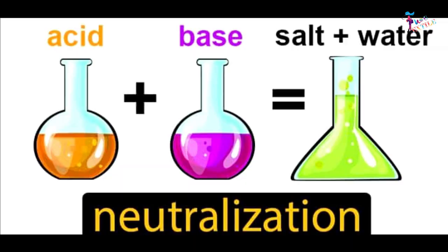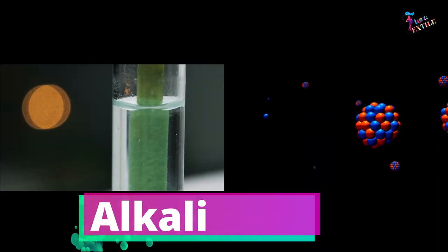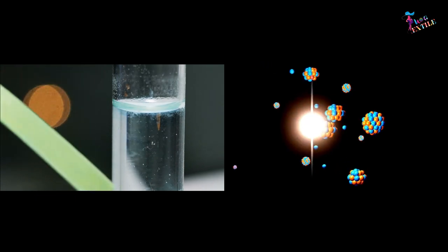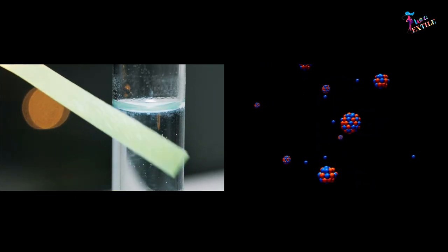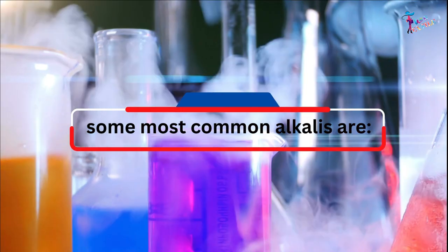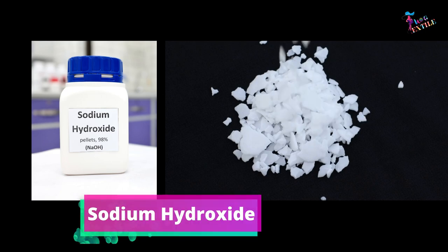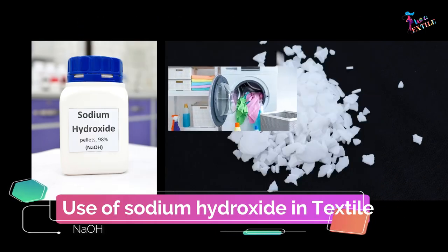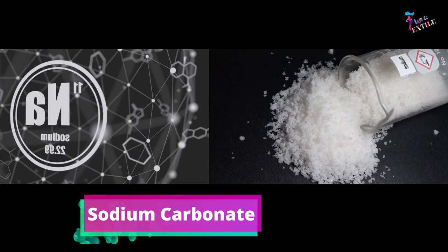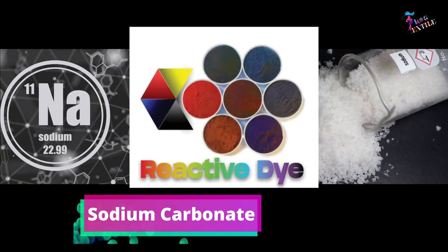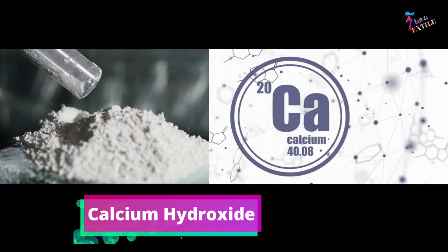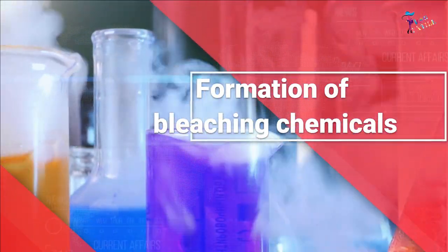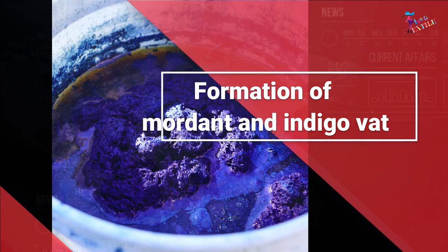Alkali. According to chemistry, the compound that provides hydroxyl ions is called alkali. Some most common alkalis are: sodium hydroxide, used in scouring, mercerizing, dyeing, soap formation, and washing; sodium carbonate, widely used in reactive dyeing; and calcium hydroxide, used to remove the hardness of water, formation of bleaching chemicals, mordant, and indigo vat.